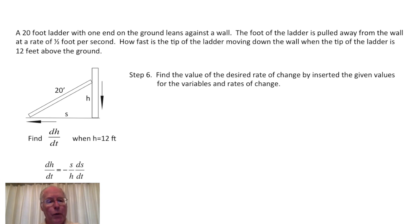So here we are back. We want to find dh/dt when h equals 12 feet, and we know that dh/dt equals minus s over h times ds/dt. We can now find the value of the desired rate of change by inserting the given quantities for the variables and rates of change. In other words, we're going to put in numbers for these variables on the right-hand side of this equation. There's three variables here: the s, the h, and the ds/dt. We'll put in numerical values, and that will lead us to our solution or our answer.